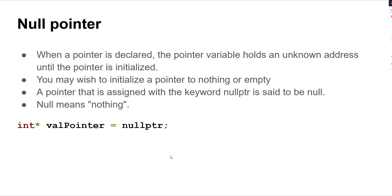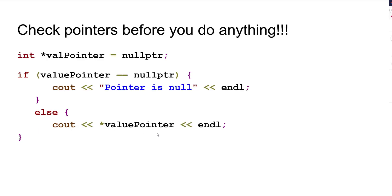When a pointer is declared, the pointer variable holds an unknown address until the pointer is initialized. You may initialize a pointer to nothing, and that nothing is nullptr or NULL all uppercase. So this is like saying int num = 0 — you initialize the pointer to zero/null. That's really what you want to set it to.